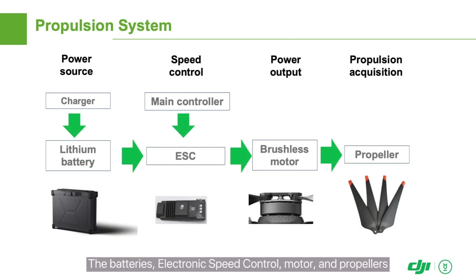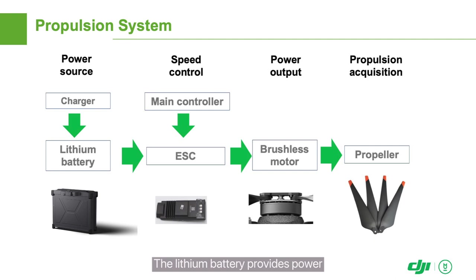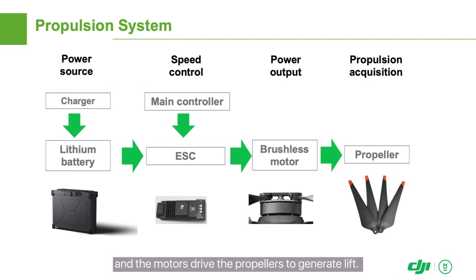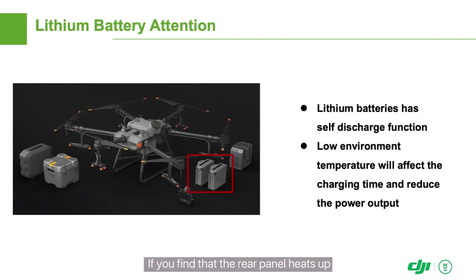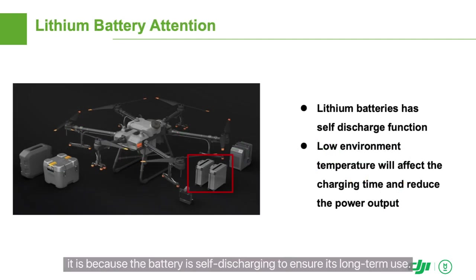The batteries, electronic speed control, motor, and propellers together make up the power system of the Agris drones. The lithium battery provides power, the ESC controls the motor, and the motors drive the propellers to generate lift. Keep in mind that the lithium battery shouldn't remain fully charged for a long time, so the smart battery is designed with a self-discharge function. If you find that the rear panel heats up, it is because the battery is self-discharging to ensure its long-term use.